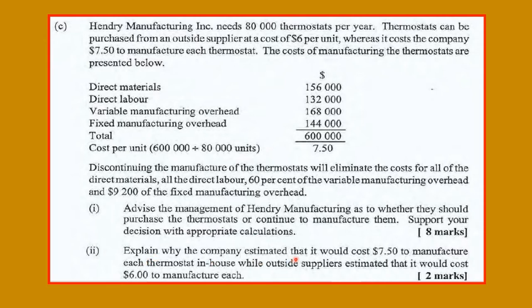They also ask us to explain why the company estimated it would cost $7.50 to manufacture each unit in-house while outside suppliers estimated it would cost $6. Henry Manufacturing needs 80,000 units per year. Two moustaches can be purchased from outside suppliers at $6 per unit, whereas it costs the company $7.50 to manufacture each. If we just look at these two figures, we would think it is cheaper to buy from outside — but there is a thing called relevant costs, and not all manufacturing costs are relevant.